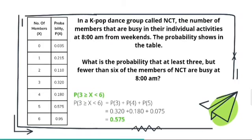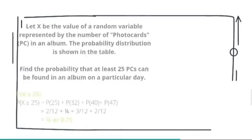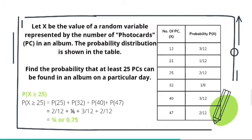And finally, the last example. Let X be the value of a random variable represented by the number of photocards (PC) in an album. The probability distribution is shown in the table. Find the probability that at least 25 PCs can be found in an album on a particular day.